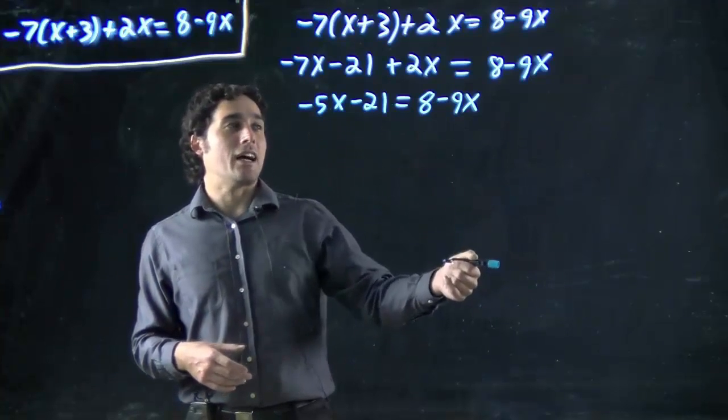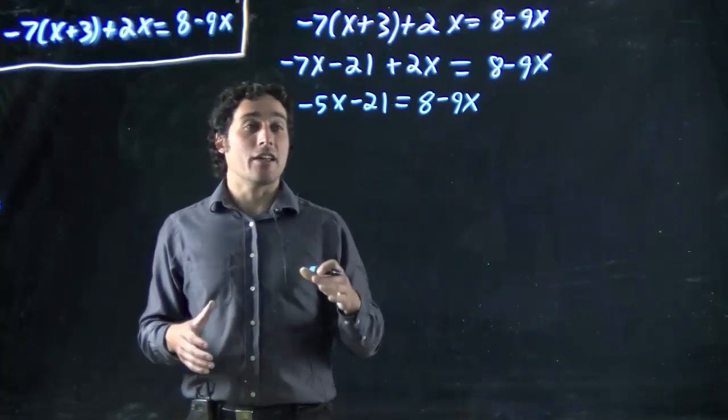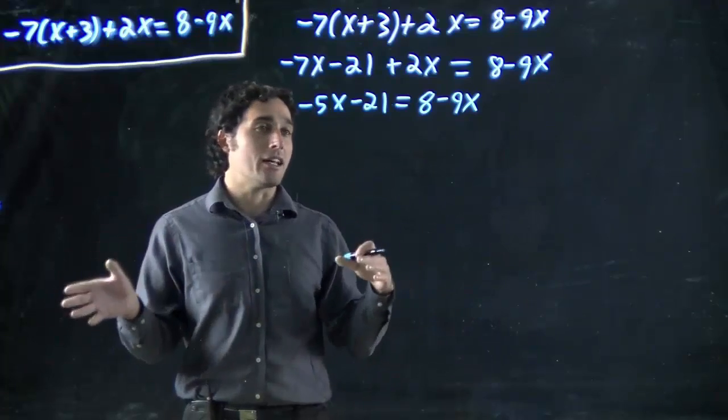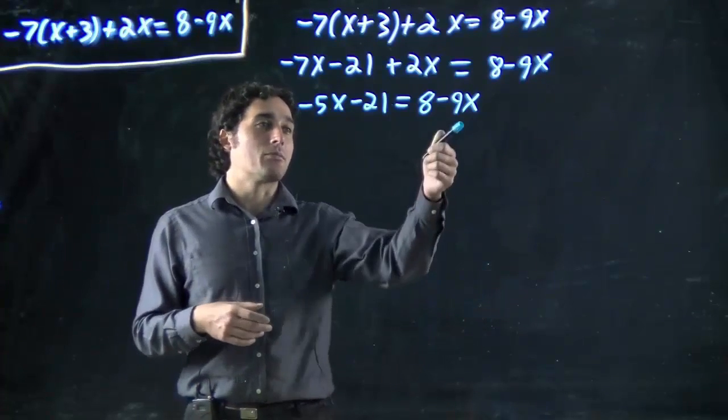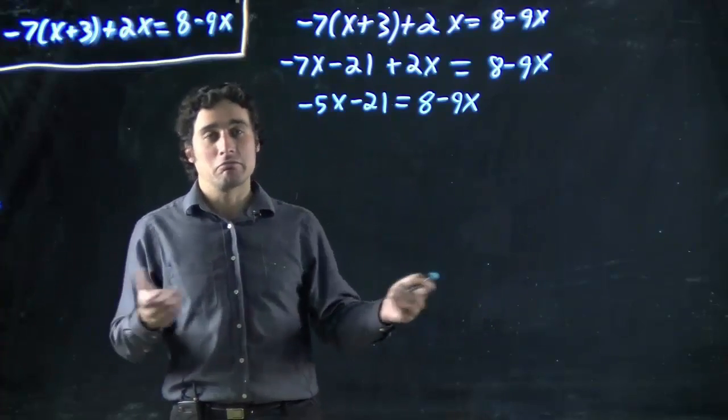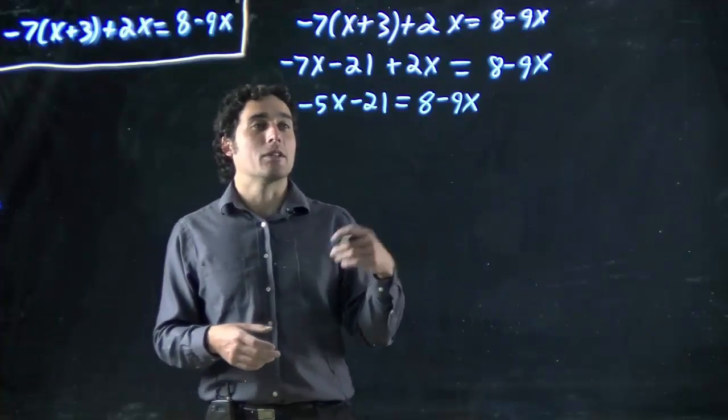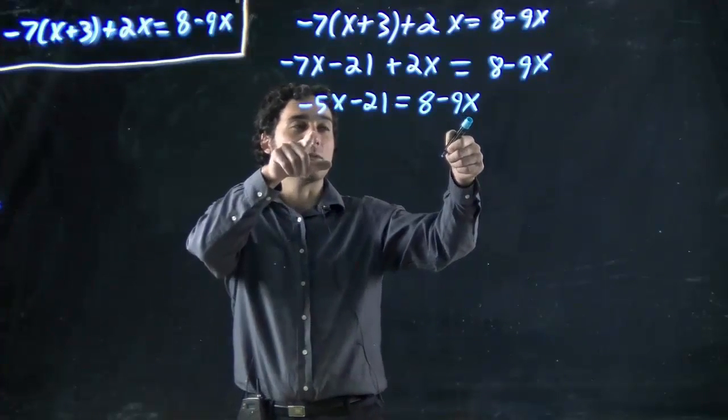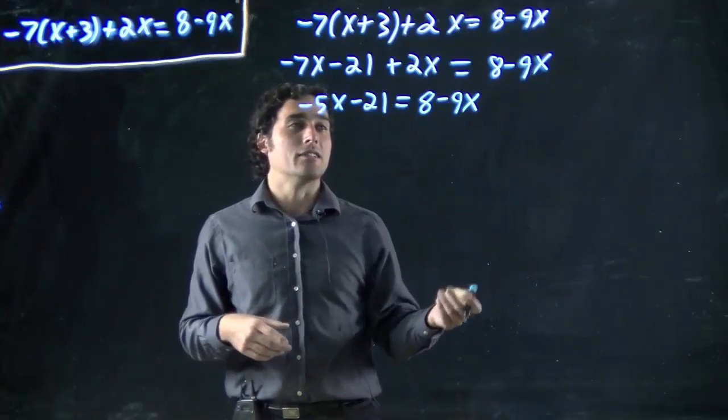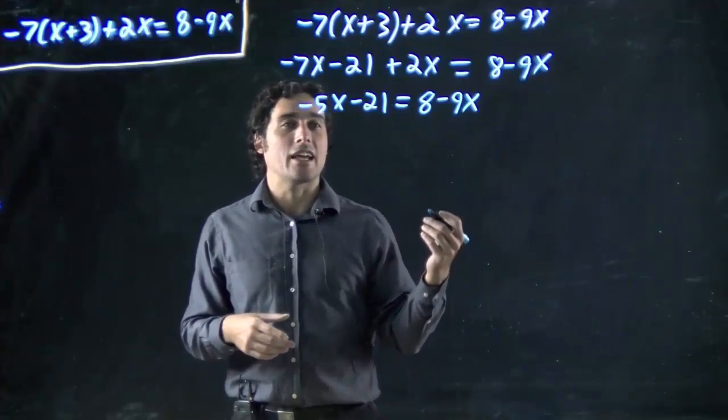So, I've got to get numbers to one side and variables to the other. It doesn't matter which. Do I want them on the left? Do I want them on the right? It doesn't matter. I'm arbitrarily going to decide to bring the variables to the left. I know that way I'm going to end up with a positive x, just making my life easier. Since this number is bigger than this one, I can see, I bring it over and it will be positive. It will save me dealing with the negative as much. But it doesn't matter.